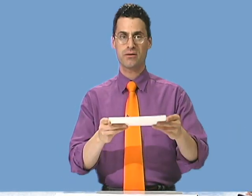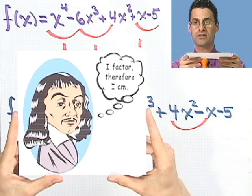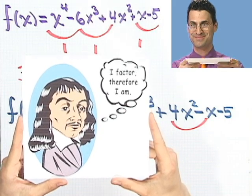Neat! So you can actually get a sense of how many positive real roots, how many negative real roots, or at least roughly how many there are by using Descartes' rule of signs. And always remember, folks, he first factored before he was. Enjoy.